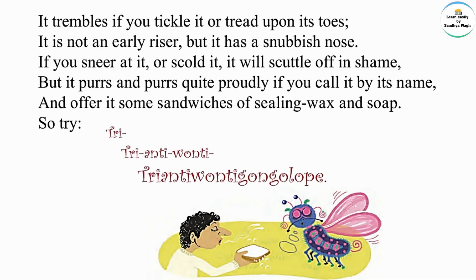It has a snubbish nose — snubbish means short, fat, and turned up at the end. If you sneer at it or scold it, it will scuttle off in shame. But it purrs and purrs quite proudly if you call it by its name.